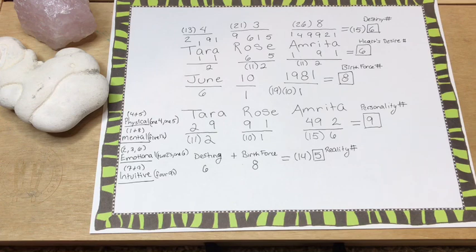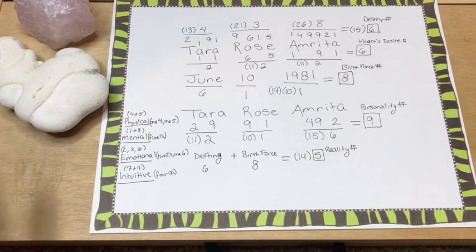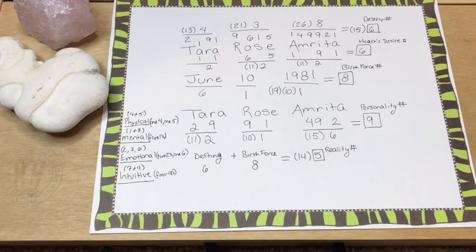So first you could take a look and see which numbers are missing. You know, because that means something too. So if on a mental plane, let's say for instance, you don't have a whole lot of numbers on the mental plane, it doesn't mean that you're not smart. It just means that perhaps that's a skill that you want to build. Juno Jordan says there are many people with super high IQs that don't have a lot of numbers on the mental plane.